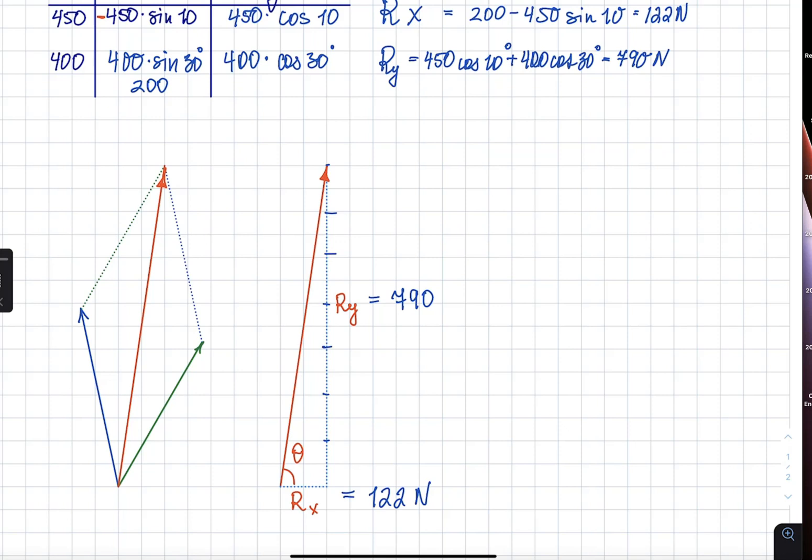Since I know the two perpendicular sides, this is a 90-degree angle, I have the two legs of my right triangle. And my resultant vector will be found as Pythagorean theorem of its X component and Y component. You can write this as RX and RY squared. And then, numerically, from this example, we have 790 squared plus 122 squared.